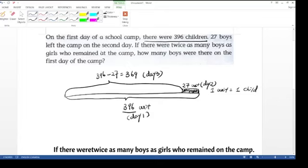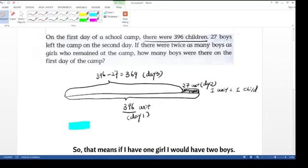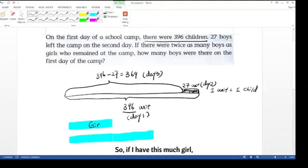There's one more. If there were twice as many boys as girls who remain on the camp, that means if I have one girl, I would have two boys. So if I have this much girl, I would have twice as much as boy.